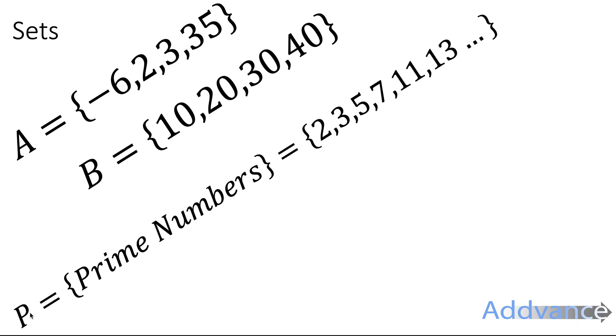Here I've got a different type of set. The set P is a set of prime numbers, which is 2, 3, 5, 7, 11, 13, and it goes on and on because there are an infinite number of prime numbers. We can describe a set either with curly brackets and a description, or curly brackets and a list of the elements inside the set.